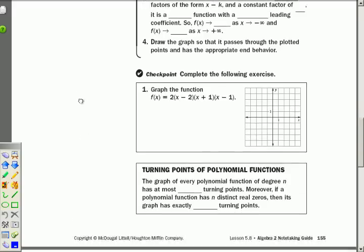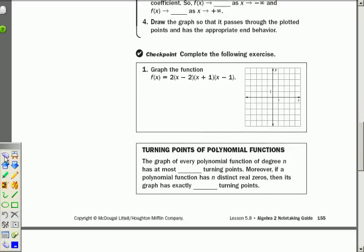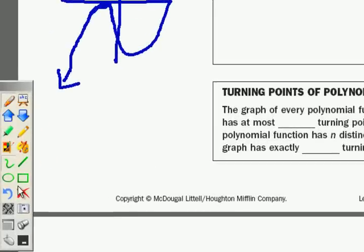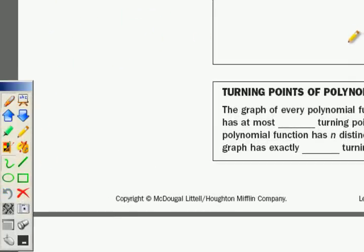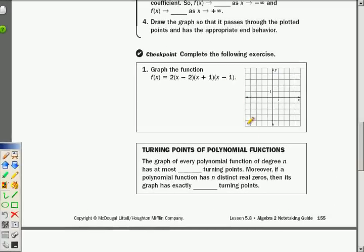Can you guys take a minute and do checkpoint number one? Welcome back. Let's see. We have a positive leading coefficient. We have a third degree polynomial. That means end behaviors are going to do this. I'm going to go through positive 2, negative 1, and positive 1. So I'm going to come up, and I'm going to go through here, and I'm going to go back down through here, and I'm going to come up through here. And again, I hope you put that on your calculator.